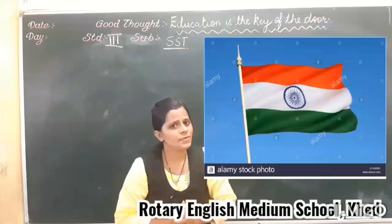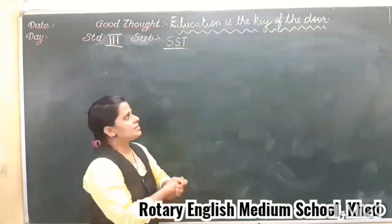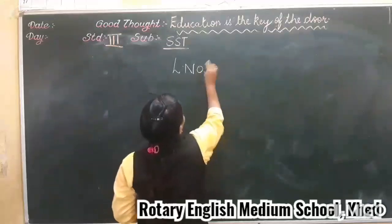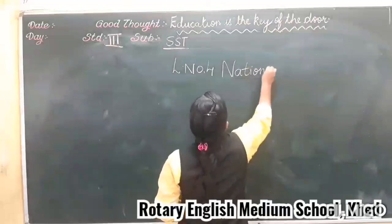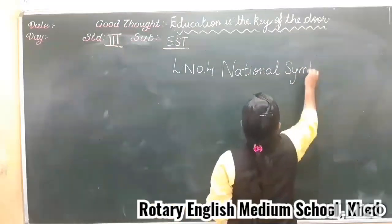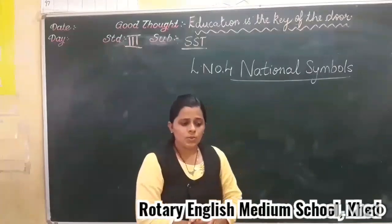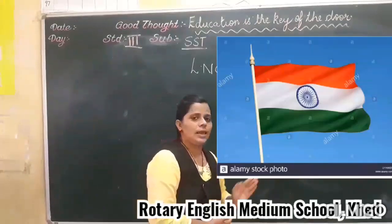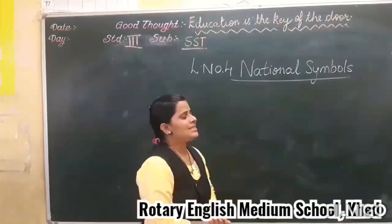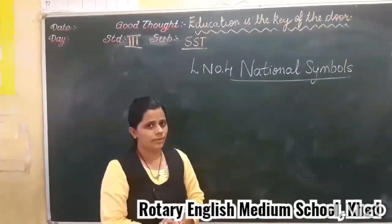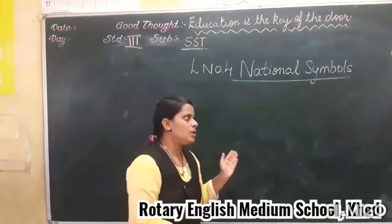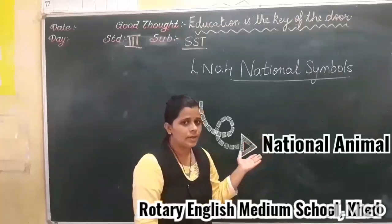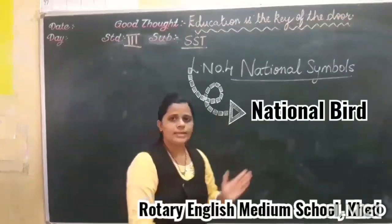So my dear children, the activity we are going to do is to start chapter number 4. Let's start chapter number 4. Along with this, we also have national flower, national animal, national bird, national song, etc.